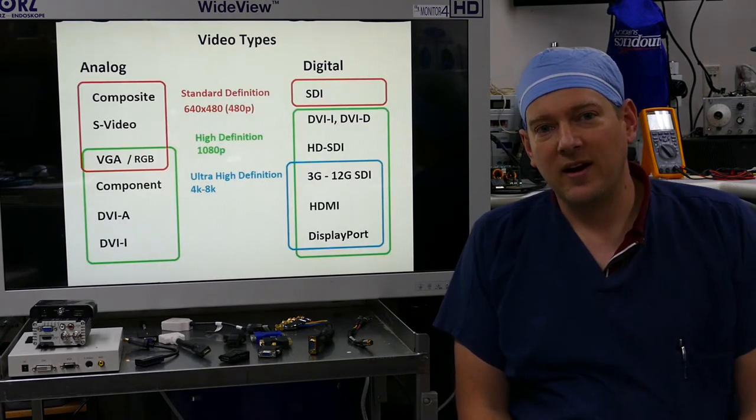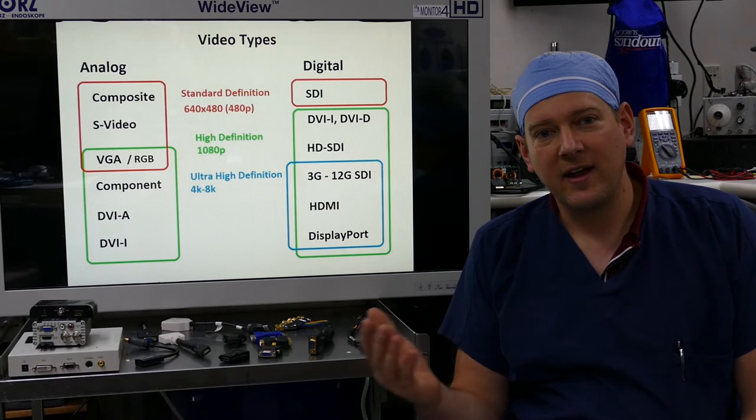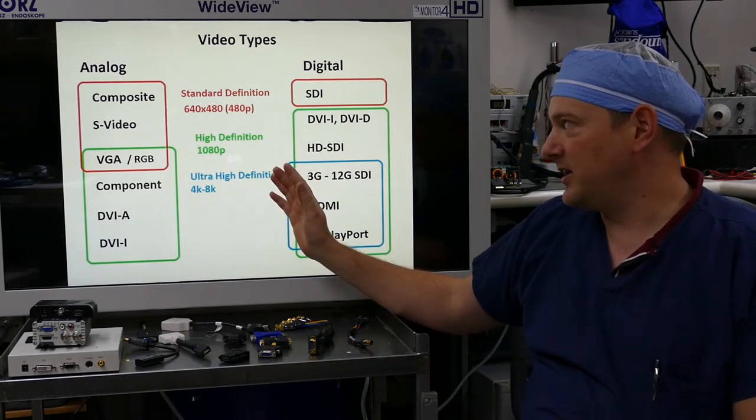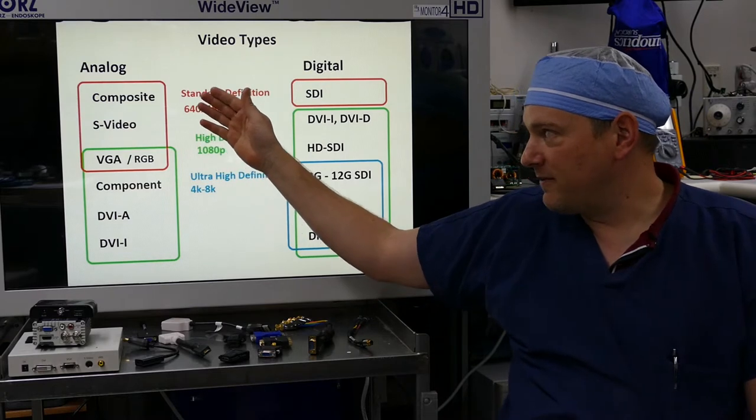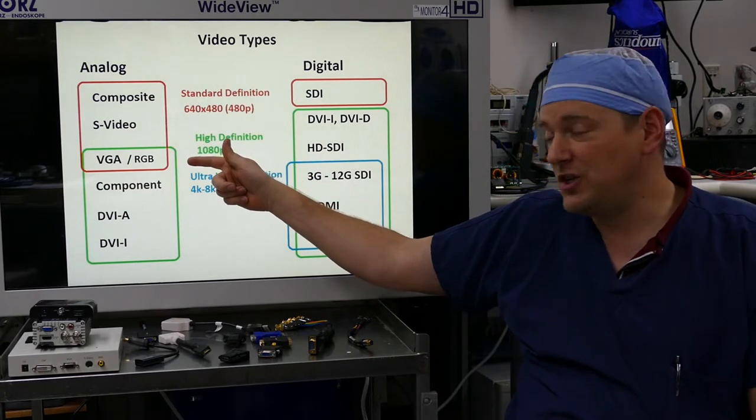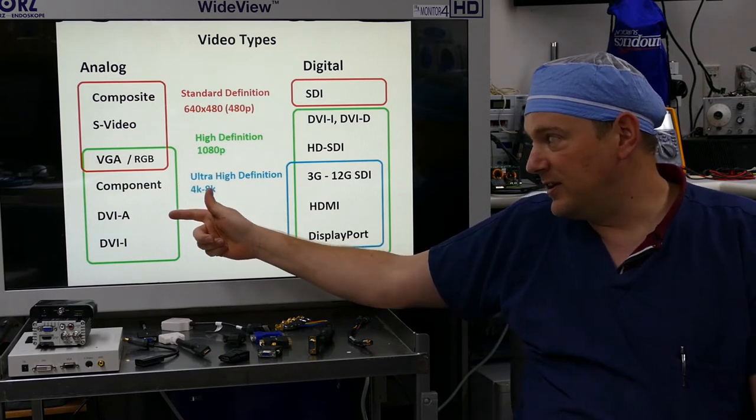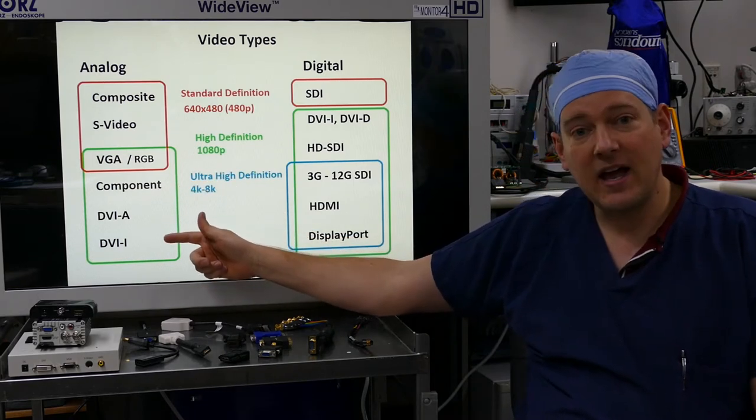Video connections can be organized into two categories: analog and digital. You can see I have them separated out over here. Analog includes composite, S-Video, VGA with RGB breakouts, component, DVI analog, and DVI-I.